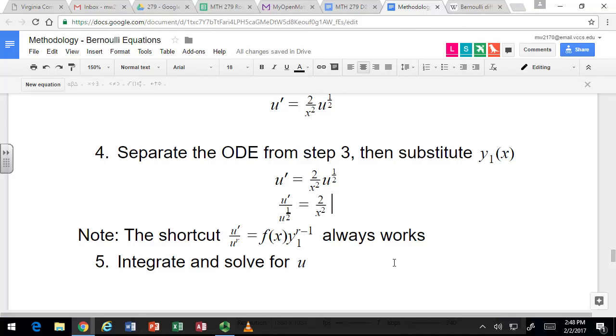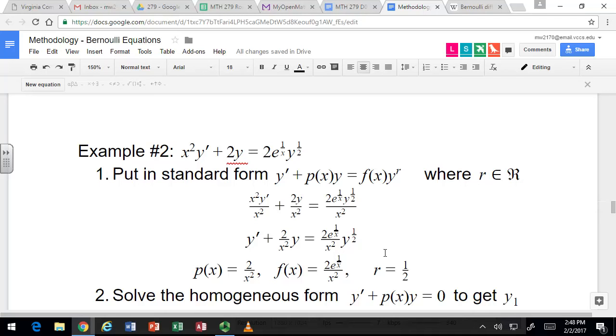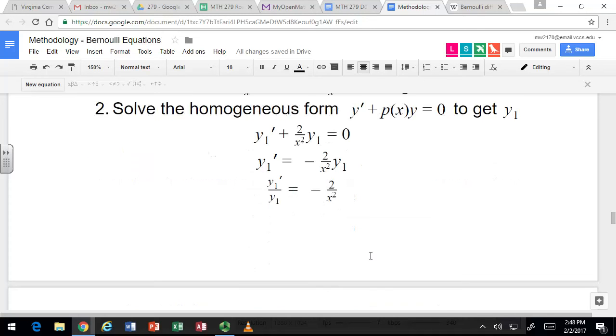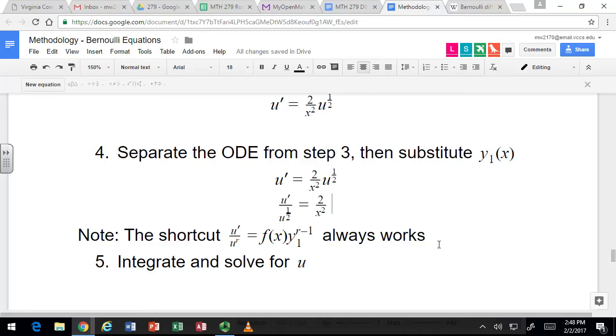Notice that the shortcut does work. R was 1/2, and we had u prime over u to the 1/2, so you could have jumped right to that. And then f was 2 over x squared times e to the 1 over x. And y1 was e to the 2 over x. So not obvious that this formula does check out. But r minus 1 in this case would be negative 1/2. And so if you have an e to the 2 over x raised to the negative 1/2, that's like a 1 over e to the 1 over x, and that cancels with the other e to the 1 over x. So all that's left is the 2 over x squared. Feel free to verify the formula. It will work.